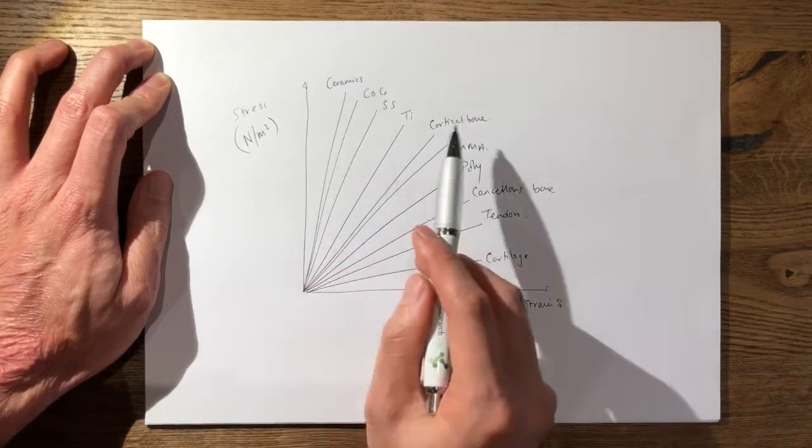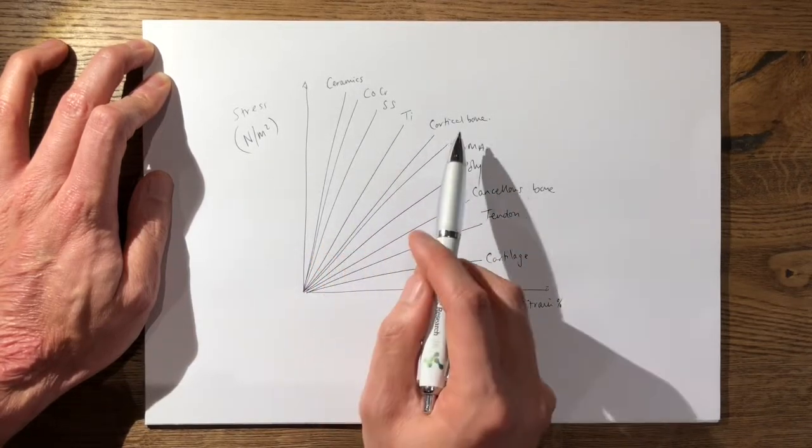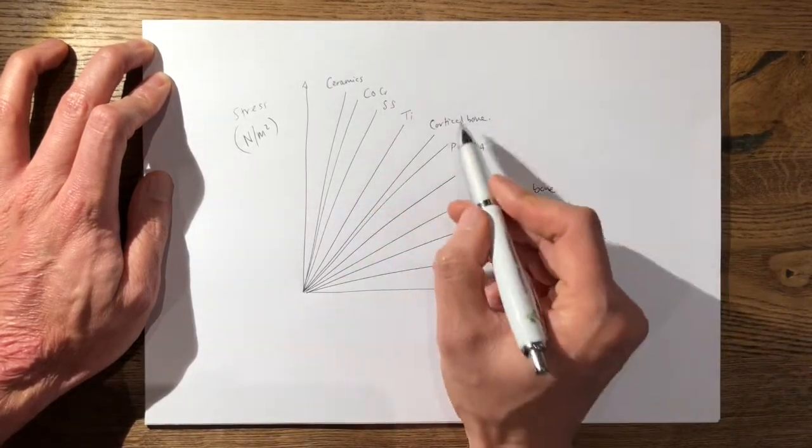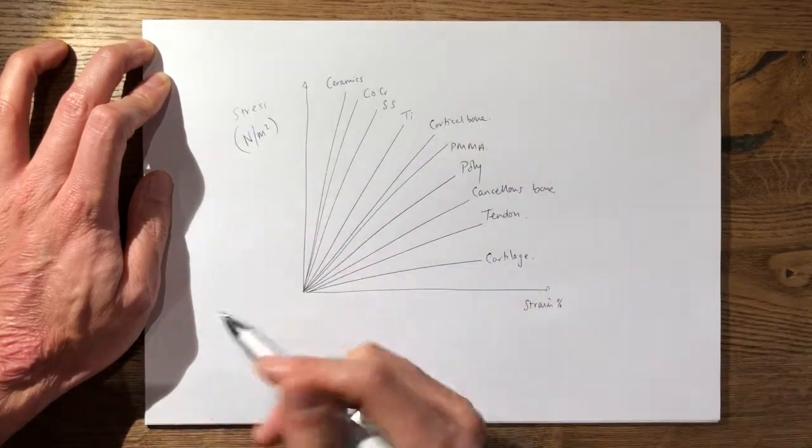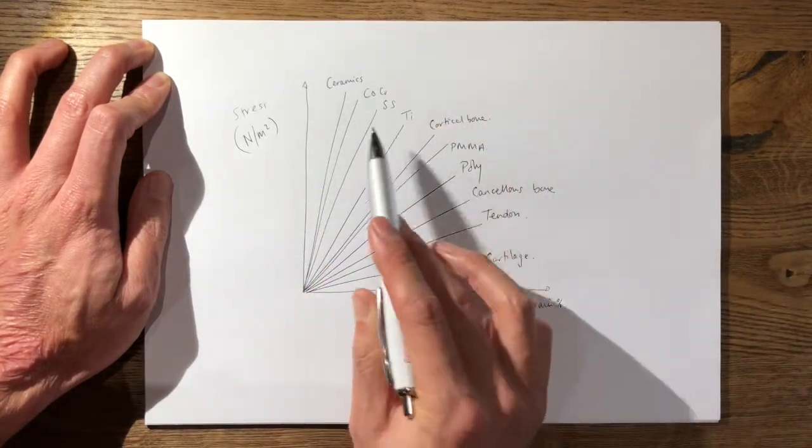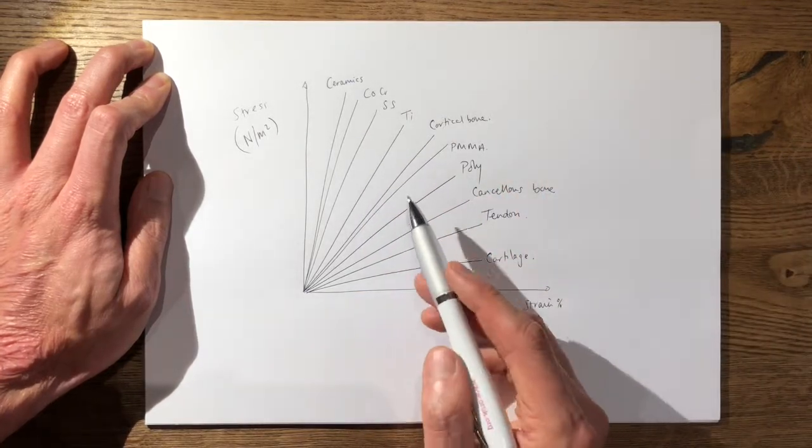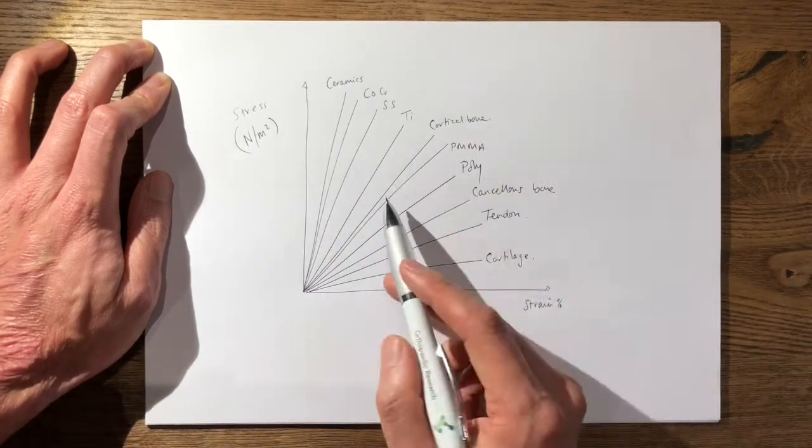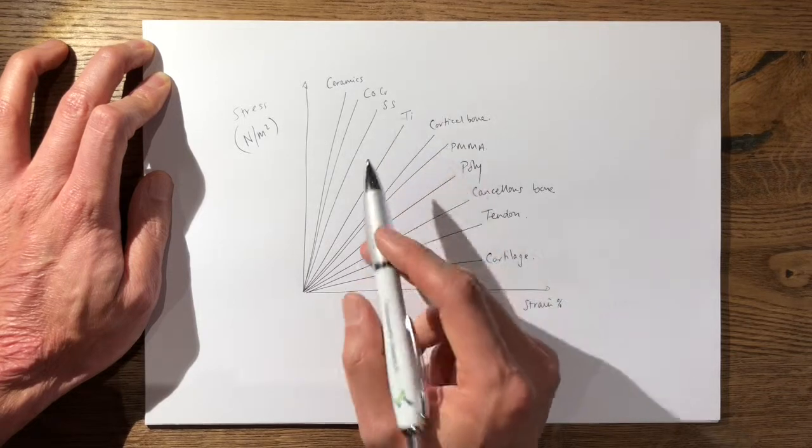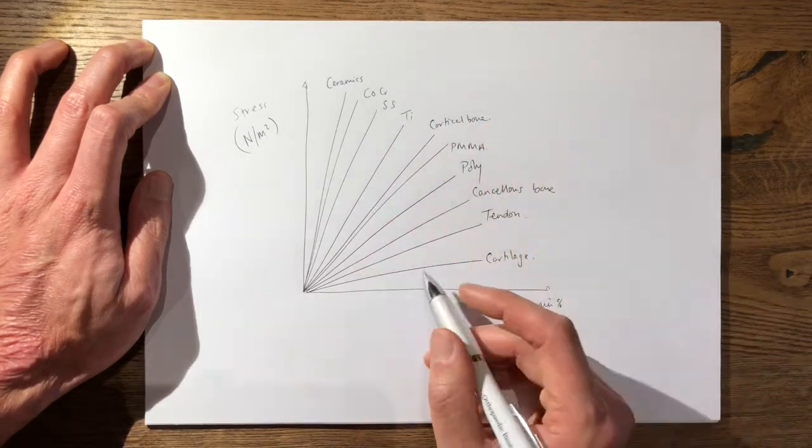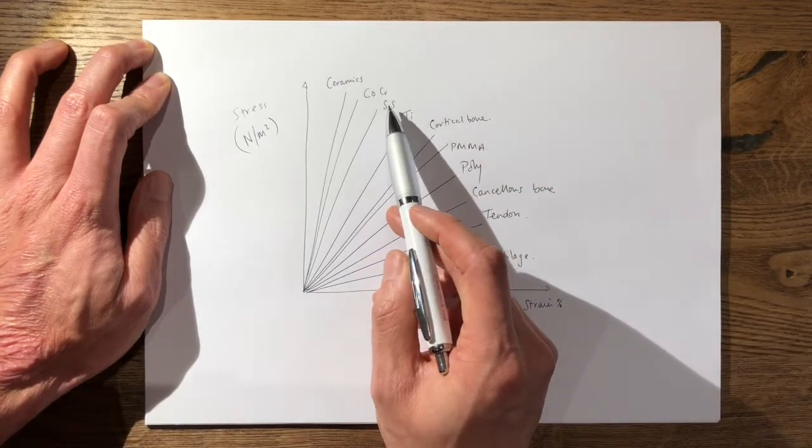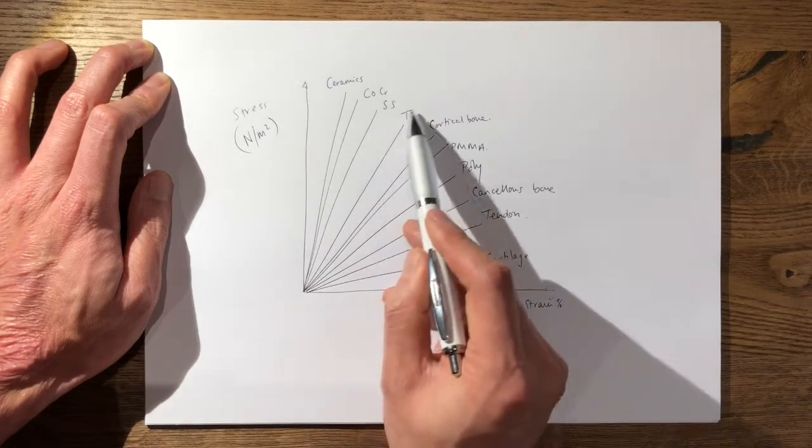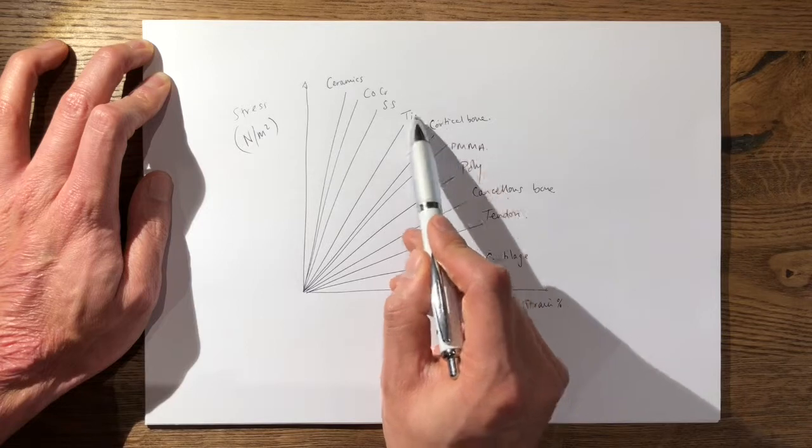Now when you have modulus mismatch, a mismatch in the Young's modulus, you have a stiffer material, so for example stainless steel on cortical bone. The higher the modulus mismatch, the more likely that the stiff material will bear the load of the forces going through the bone. The reason this is important is because if you have that scenario, you'll see stress shielding, which is why you typically get more stress shielding in implants which are stiffer such as stainless steel compared to titanium, which has less of a modulus mismatch.